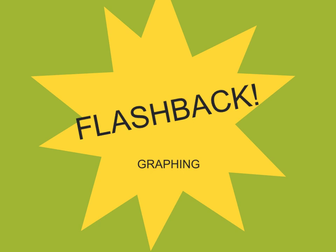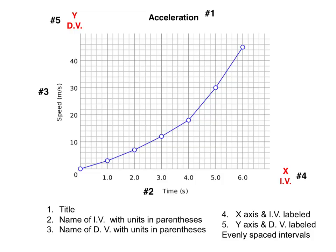The flashback for this unit is going to be on graphing scientific information. If you are going to display the information that you gathered from your scientific investigation, it's pretty important that the reader knows what they're looking at. Be sure to include the following in your graph: number one, the title; number two, the name of the independent variable and also the name of the dependent variable. Both should have the units in parentheses very nearby. Label the x and y-axis, and include the fact that the x-axis is the independent variable and the dependent variable is on the y-axis. Make sure that your intervals are evenly spaced. For example, in this graph, time is represented in every one second, so each major line represents one second of time. For the dependent variable, each major line represents 10 meters per second.